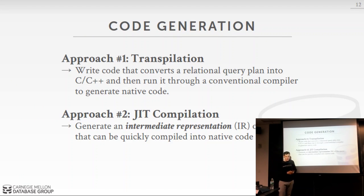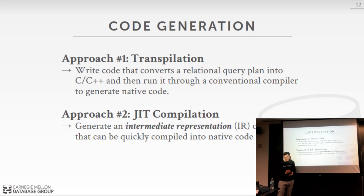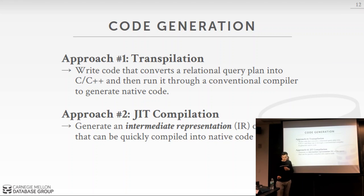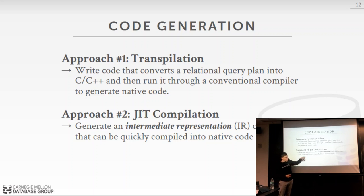The two ways we're going to do code generation: the first is called transpilation — we write code that generates code that we compile using an off-the-shelf compiler like GCC, Clang, or ICC. The second approach is JIT compilation, where we generate an intermediate representation of the query — called IR — and compile that quickly into machine code that we invoke. We use the LLVM to make this happen.